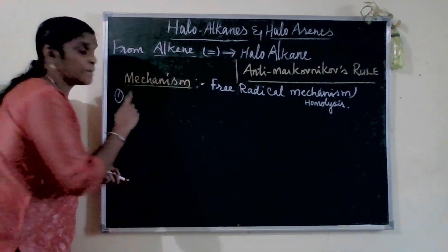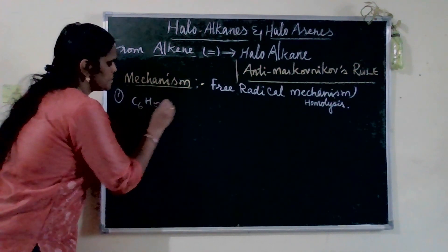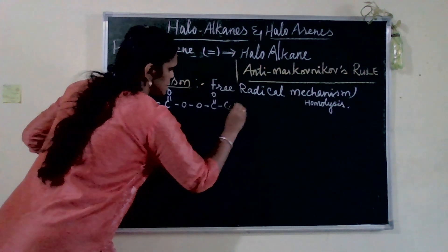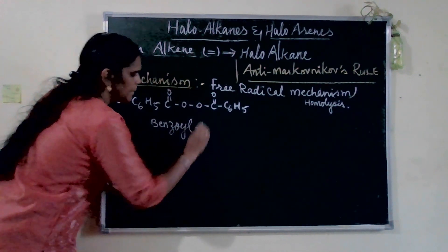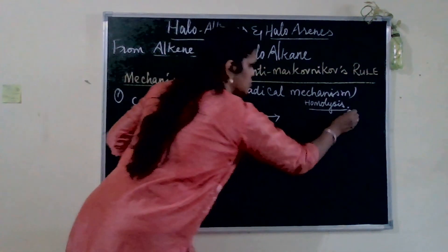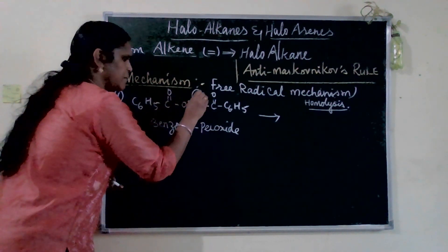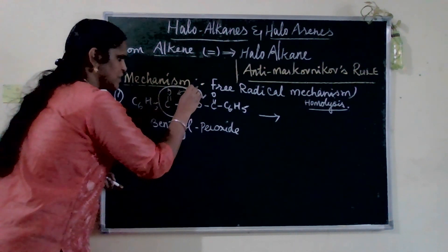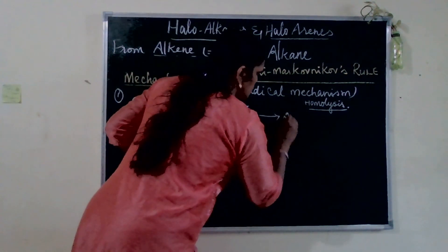Benzoyl peroxide has the structure C6H5-C(=O)-O-O-C(=O)-C6H5. In the homolysis process, the two electrons each go to their own respective atoms — the bond breaks homolytically. This produces 2CO2 molecules and two C6H5 free radicals (phenyl free radicals), which is essentially benzene as a free radical. This is the first step.